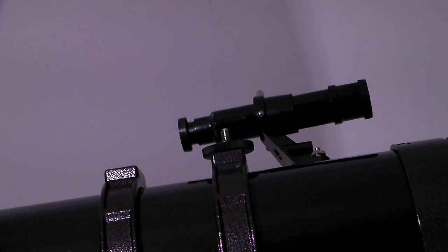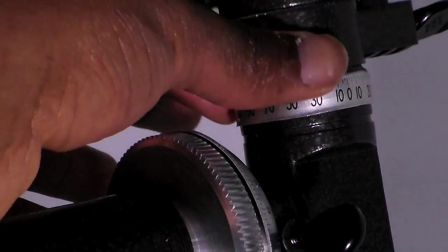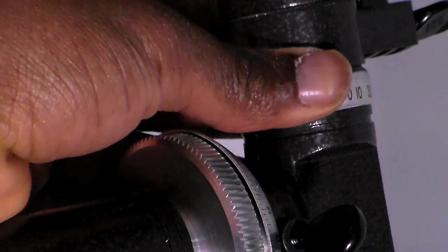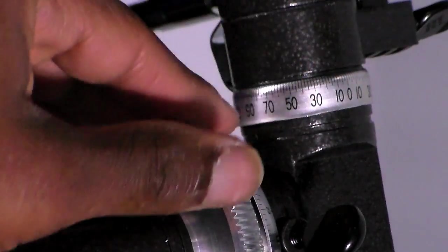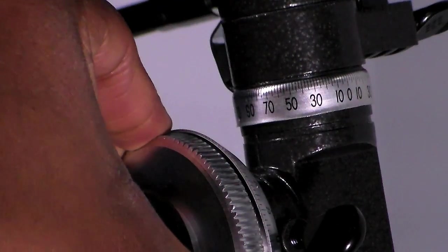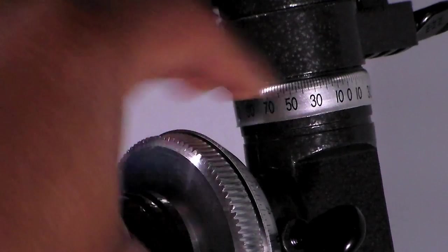The finder scope is used to locate a distant object, but with lower resolution than the main telescope. Without moving the main telescope, turn the adjustment thumbscrews around the finder scope bracket until the crosshairs of the finder scope are centered on the object chosen with the main telescope.